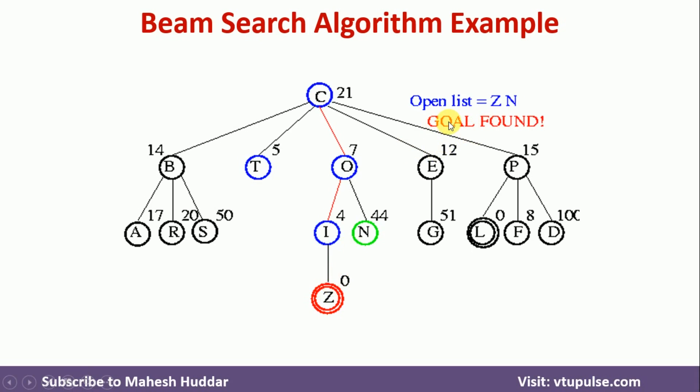So the difference between this beam search algorithm and the other two algorithms, that is hill climbing and best first search algorithm is, in hill climbing we will keep only one successor. In best first search algorithm, we will keep all the successors.